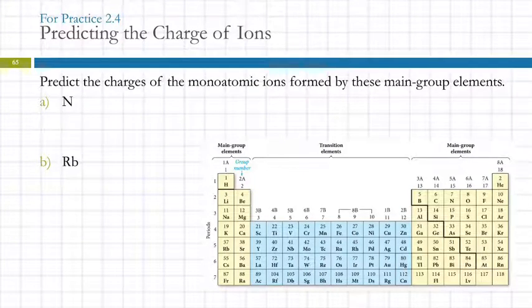We should be able to answer questions like this. Predict the charges of the monatomic ions formed by these main group elements. Nitrogen, N. You find it on the periodic table. It's right in here. Is it going to be positive or negative? Negative, because it's a non-metal. We'll predict the charge by starting over here, 0, minus 1, minus 2, minus 3. The reason that works is that nitrogen, which has 7 protons and 7 electrons, is going to gain electrons so that it has the same number of electrons as the nearest noble gas.